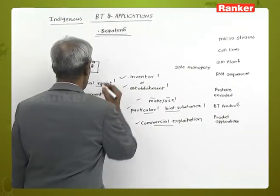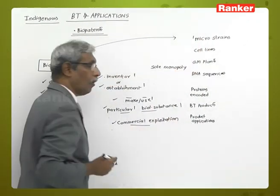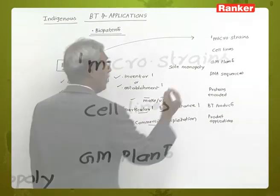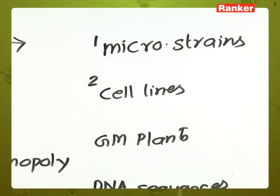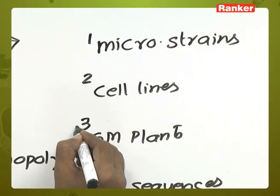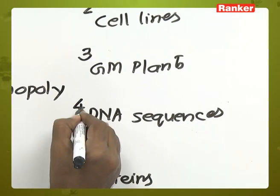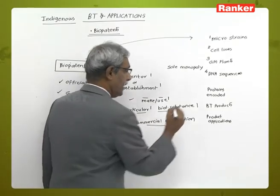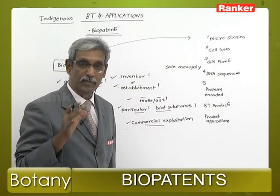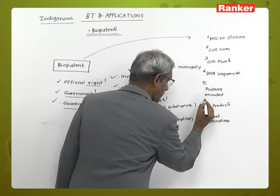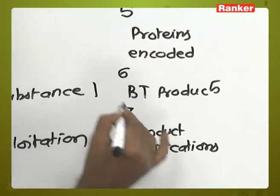When we take a biopatent in terms of biology, it could refer to microbial strains which have been discovered, or all the cell lines which have been originally discovered. It could refer to a genetically modified plant, a DNA sequence discovered by a scientist, proteins encoded by that specific DNA, biotechnology products, or the product applications of biotechnology.